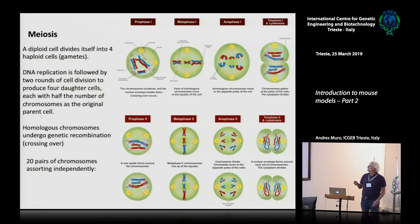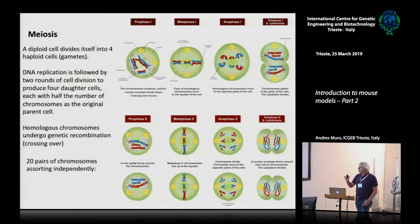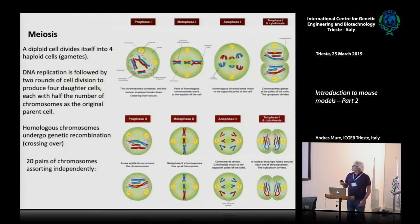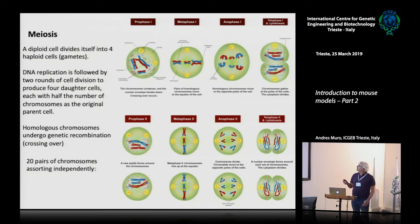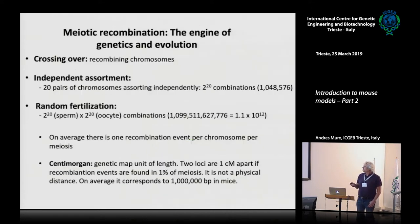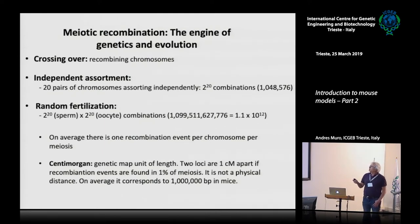Meiosis is the source of variability. We have recombination in the first meiosis process, in which there is exchange of genetic material between chromatids. So there is crossing over that happens during meiosis, independent assortment of chromosomes during meiosis, and then random fertilization.